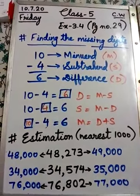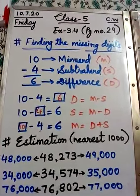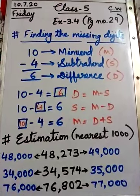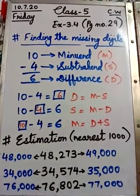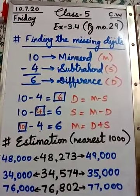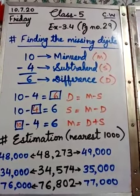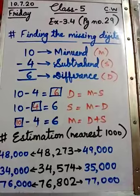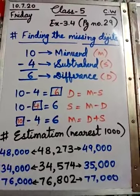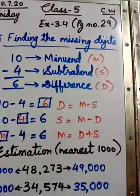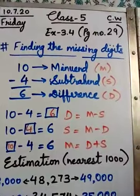Good morning class 5 students and parents. I wish good health for all of you. Today's date is 10th July 2020 and the day is Friday. In today's class we are going to understand some concepts. Let us begin with finding the missing digits.